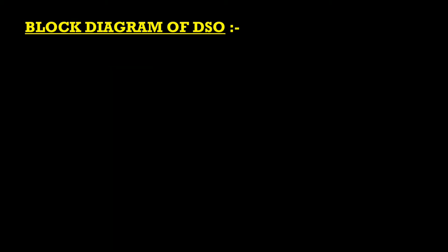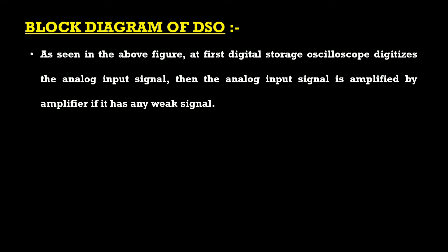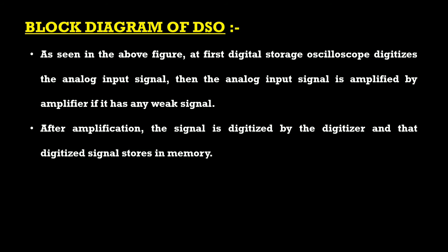As seen in the block diagram, the DSO first digitizes the analog input signal. The input signal is amplified by the amplifier, which amplifies any weak signal. Then, with the help of the digitizer circuit, that analog signal is converted into a digital signal. After amplification and digitization, the digitized signal is stored in the memory.